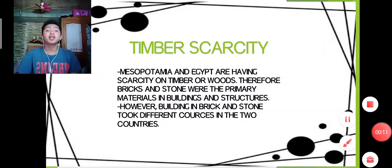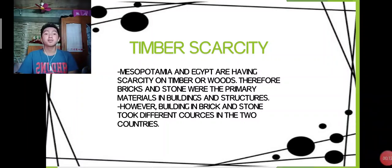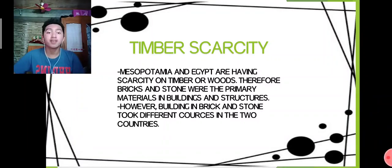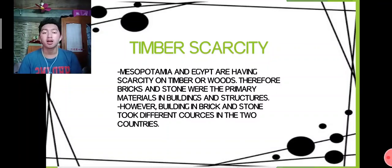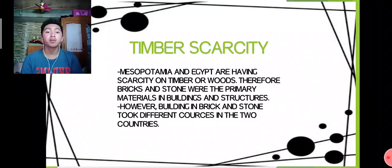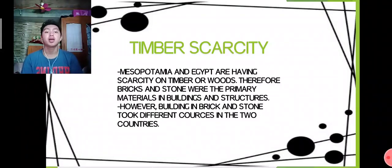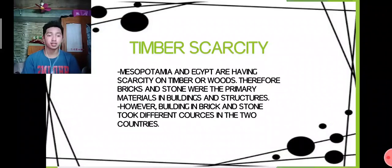Timber Scarcity: During the Mesopotamian and Egyptian times, they experienced scarcity of timber or wood. Therefore, bricks and stone were their primary materials in building structures. However, building in brick and stone took different courses in the two countries.